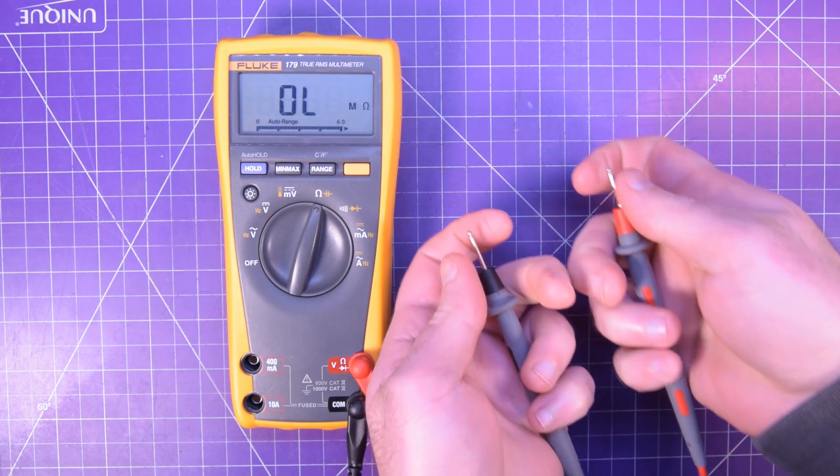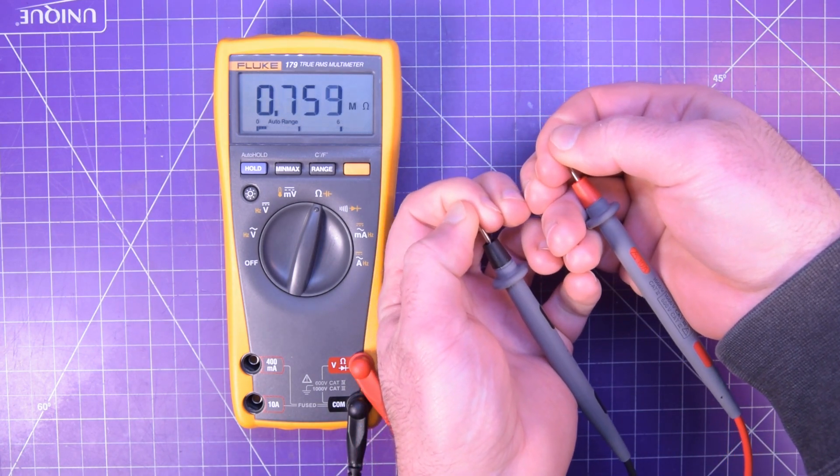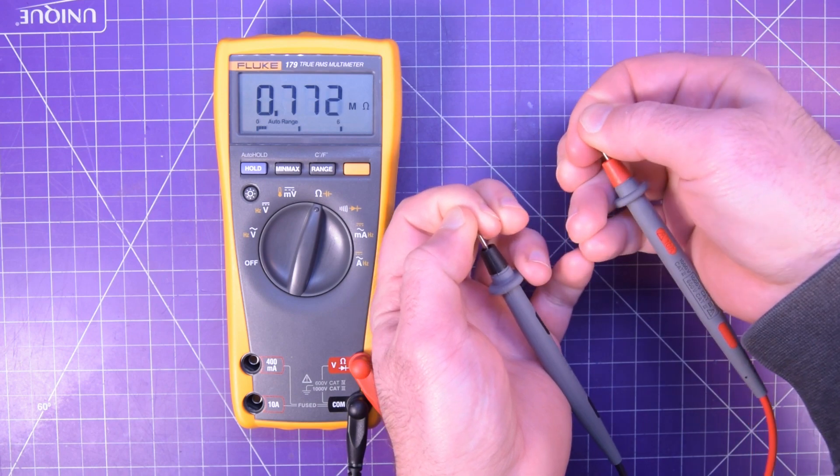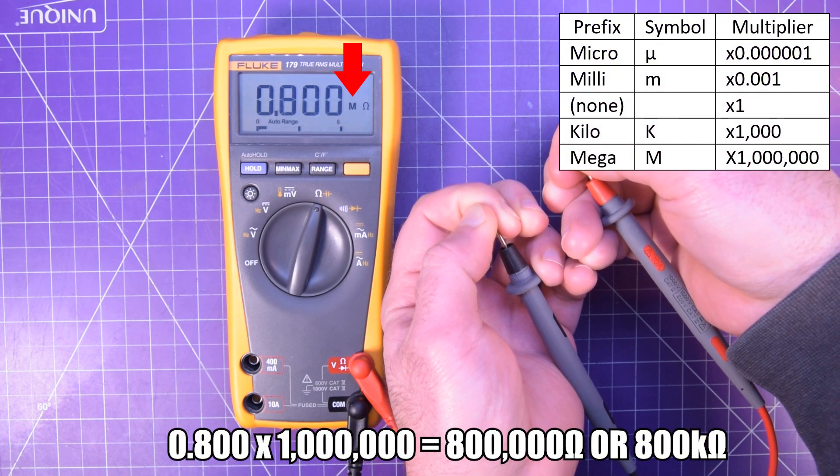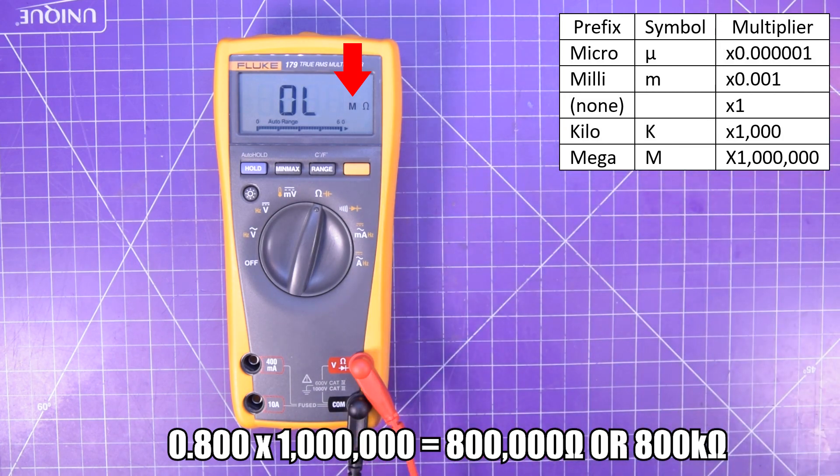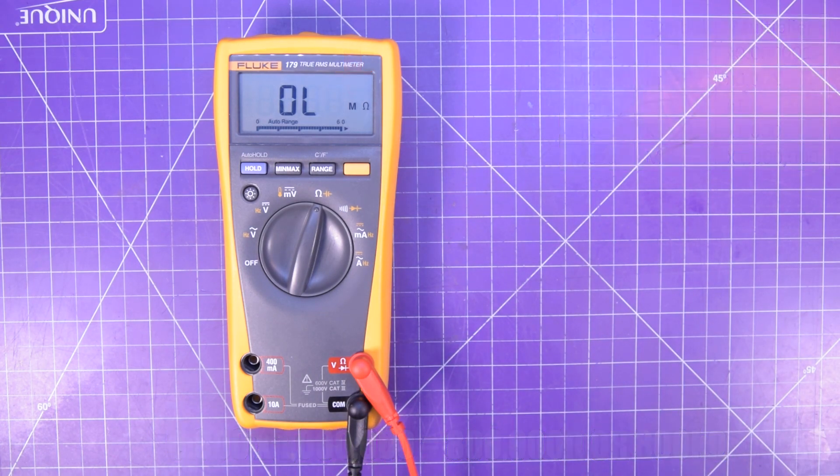Another interesting experiment is to check your skin's resistance. All you have to do is pinch the metal ends of the leads. Looks like I have about 0.8 megohms of resistance, or 800,000 ohms. This will change depending on how dry my skin is. The drier it is, the more resistance it'll have.